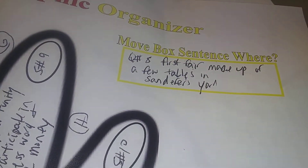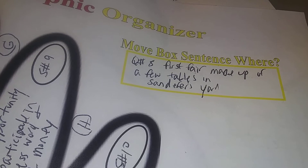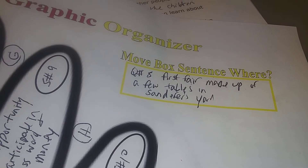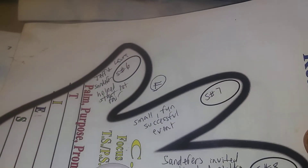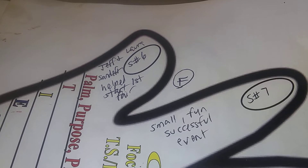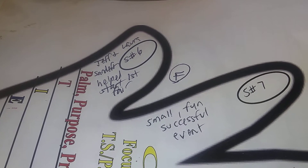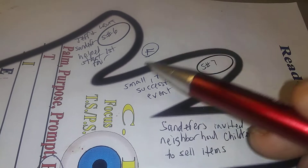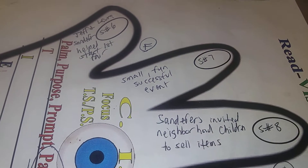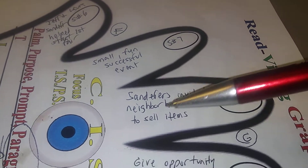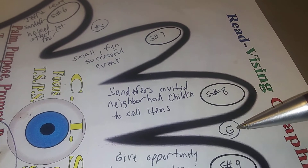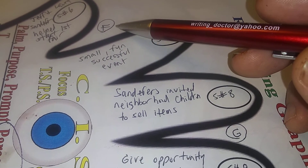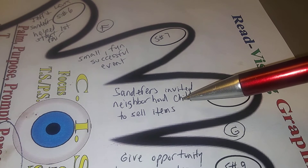Keep in mind the keywords are 'the first fair,' 'just a few tables.' Since they were in their backyard, they had to set up tables before they could have the fair. Sentence six says: 'Jeff and Laura Sandifers helped start the first fair.' Could you set up a few tables right there and then have a small, fun, successful event? Yes, that could work. Then sentence seven says the Sandifers invited the neighbor children to sell items — so they'd need the tables set up first for a place to put their items.